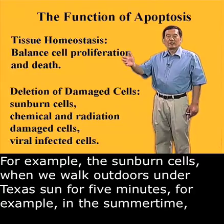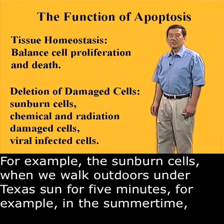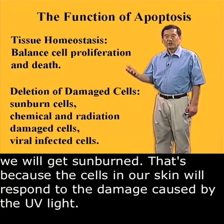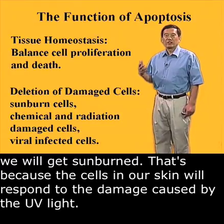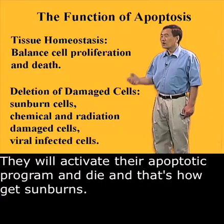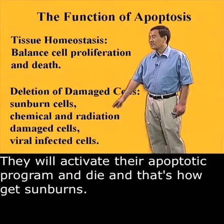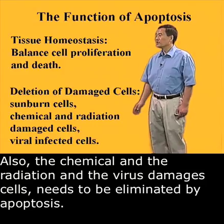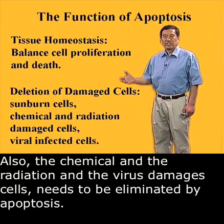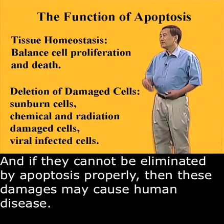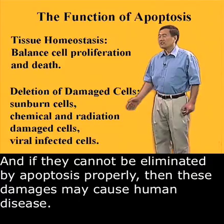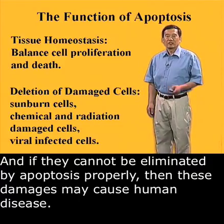When we walk outdoors under the Texas sun for five minutes in the summertime, we will get sunburns. That's because cells in our skin respond to the damage caused by UV light — they activate their apoptotic program and die, and that's how we get sunburns. Also, cells damaged by chemicals, radiation, and viruses need to be eliminated by apoptosis. If they cannot be properly eliminated, these damages may cause human disease.